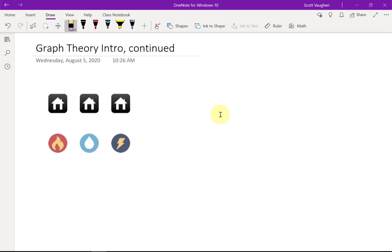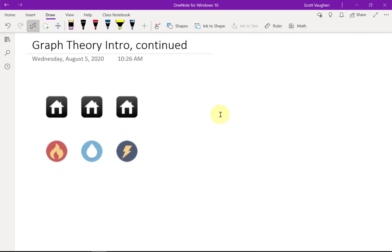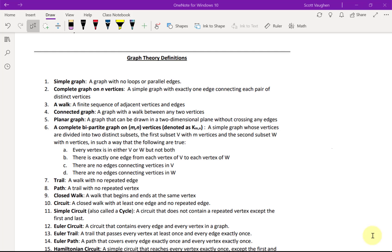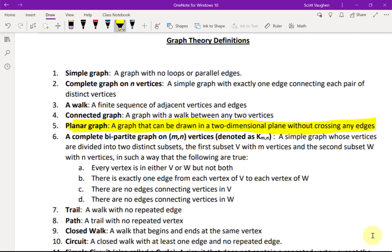Think about that, and I'll answer that puzzle at the end. Okay, so in the previous video, I introduced a definition that's right here for planar graph. A planar graph, that's a graph that can be drawn in a two-dimensional plane without crossing any edges. So that's exactly what we're looking for in this three utilities puzzle, looking for whether or not we can create a planar graph.